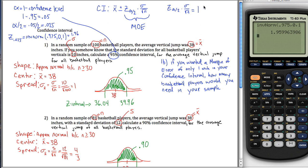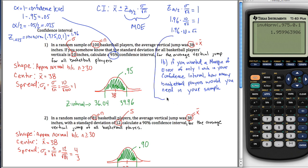All of this side work allows me to fill in the formula. Z sub alpha over 2 is 1.96. I already know that sigma is equal to 10 — I figured that out earlier. I don't know what N is; that's what I've been asked for. So I want to solve for N. I can do that by multiplying both sides of the equation by the square root of N, getting 1.96 times 10. That gives me that the square root of N equals 19.6, so N is 19.6 squared.